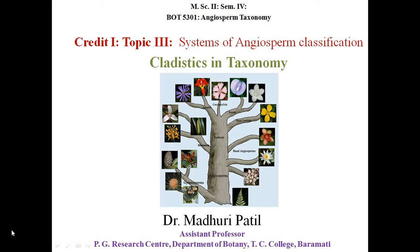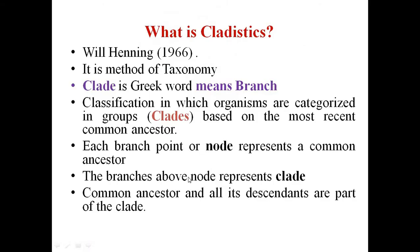Dr. Madhuri Patil, in continuation with the topic systems of angiosperm classification, will discuss cladistics, which is useful for classification and taxonomy. This term was given by Willi Hennig in 1966. It is derived from the Greek word 'clados' meaning branch, and classification is categorized into groups called clades.